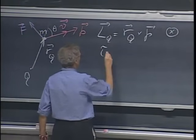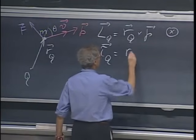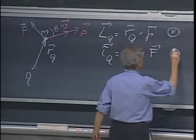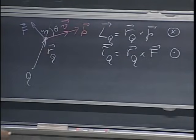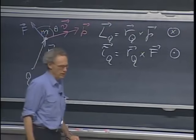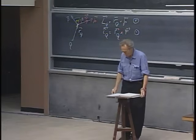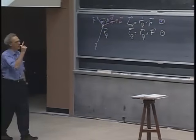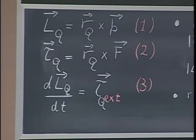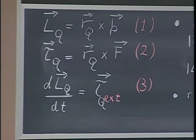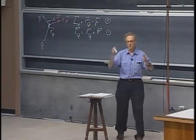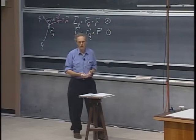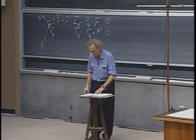The torque relative to point Q is defined as the position vector cross f — in this case, that would be out of the blackboard. The magnitude can be found, but you have to take into account the angle between the position vector and the force. A torque leads to a change in angular momentum, as shown in equation three. If there is no torque, angular momentum won't be changing. For a system of many interacting particles, as long as there is no net external torque on the system as a whole, the angular momentum of the system will be conserved.